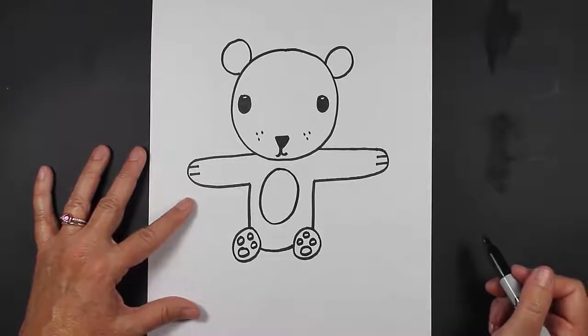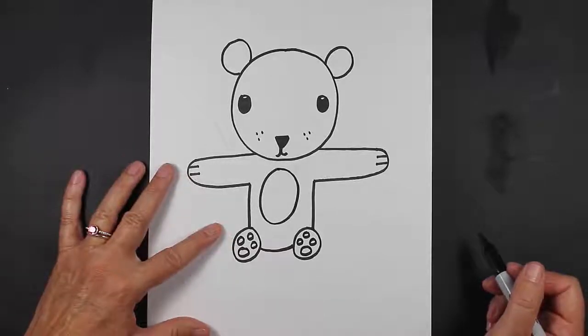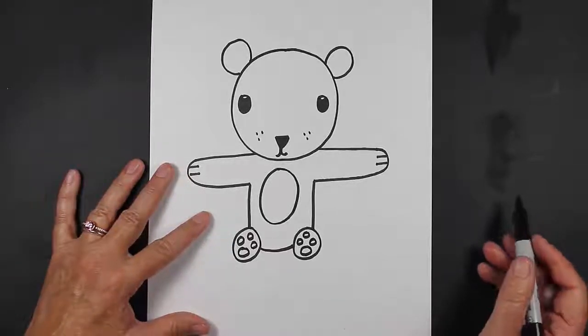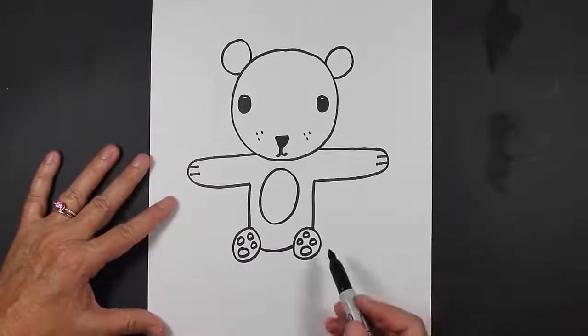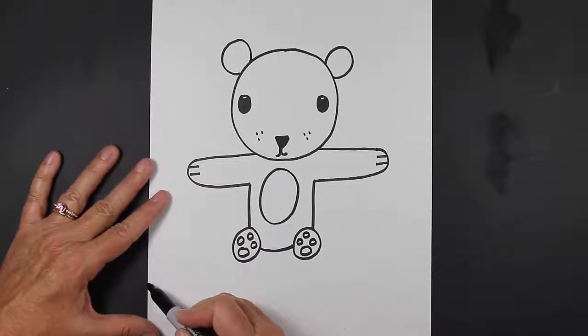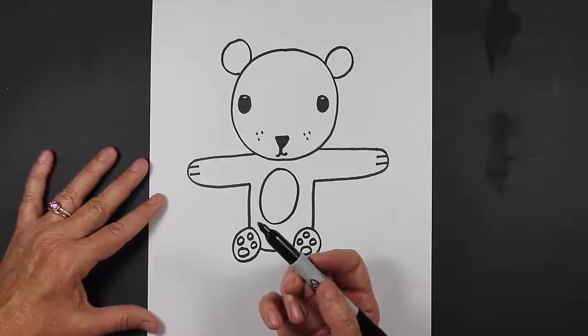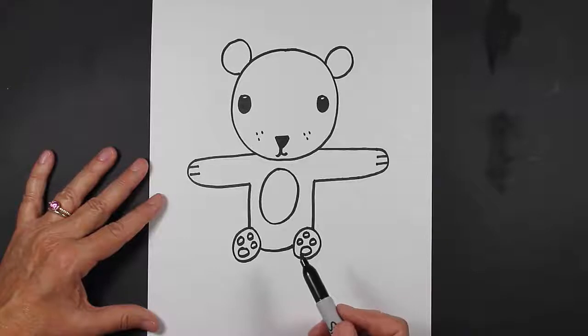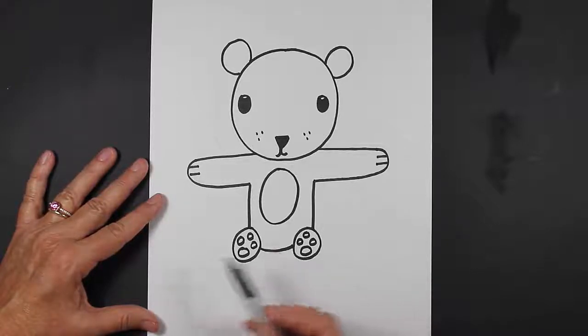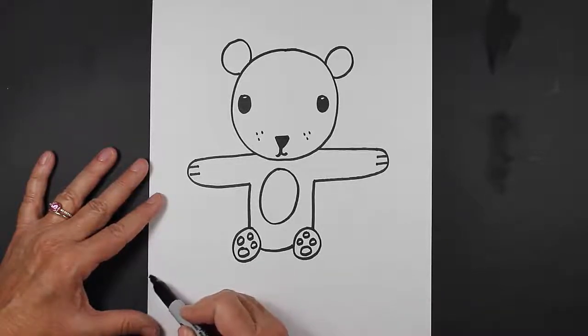Now the cool thing about teddy bears is they like to do a lot of things like hang around. So we're going to have our teddy bear hanging around on a little rug. And if you'd like to have your teddy bear hanging around on a different place, go ahead and do that. He could be hanging around on a bed or on a couch. But my teddy bear is going to be on a rug.